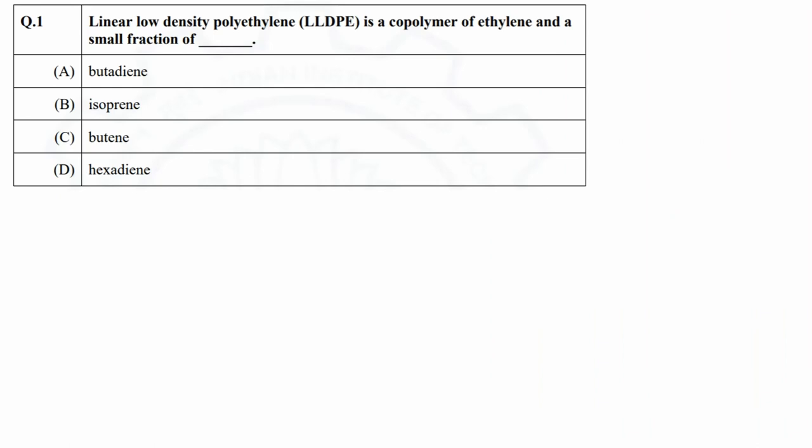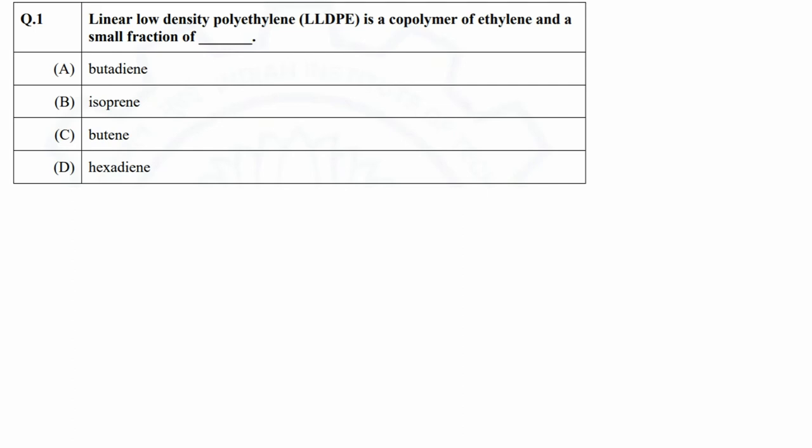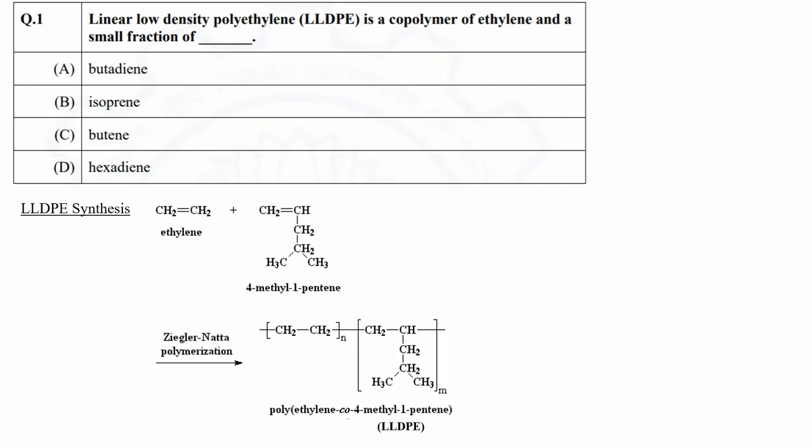Let's start with the first question. In this question, identify the monomer other than ethylene to synthesize LLDPE. As we know, LLDPE is a linear polymer with short branches. To introduce branches in polyethylene, ethylene is polymerized in presence of a small amount of alpha olefin. When two different monomers are used to synthesize a polymer, the polymer is known as a copolymer.